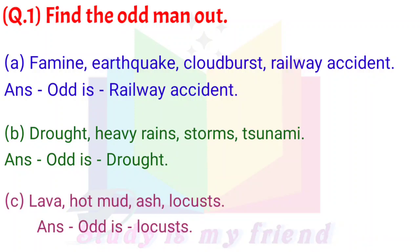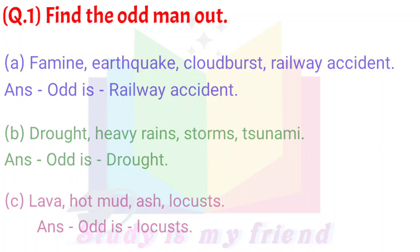C) Lava, Hot Mud, Ash, Locusts. Answer: The odd one out is Locusts.